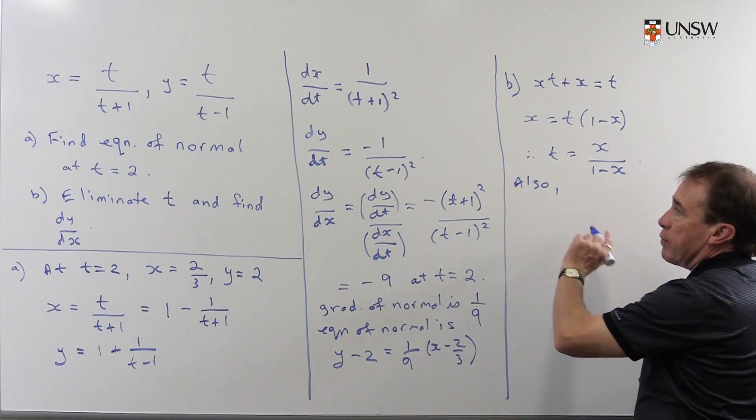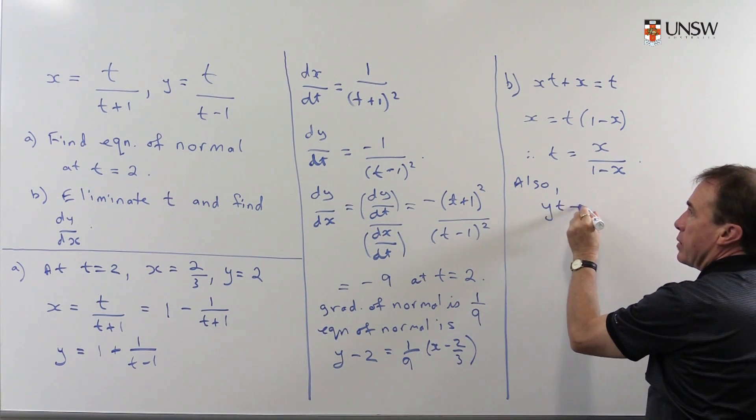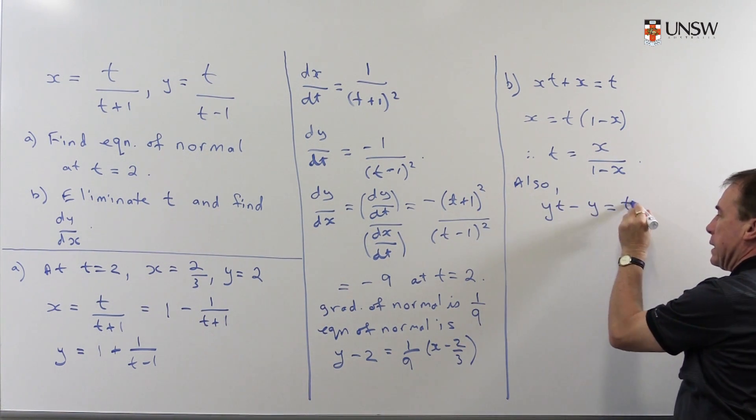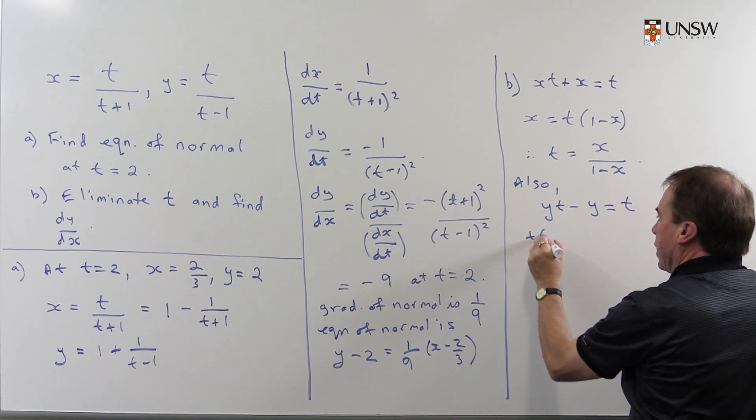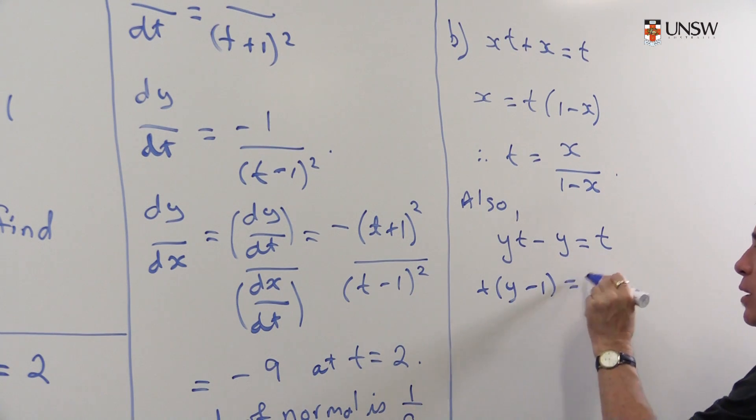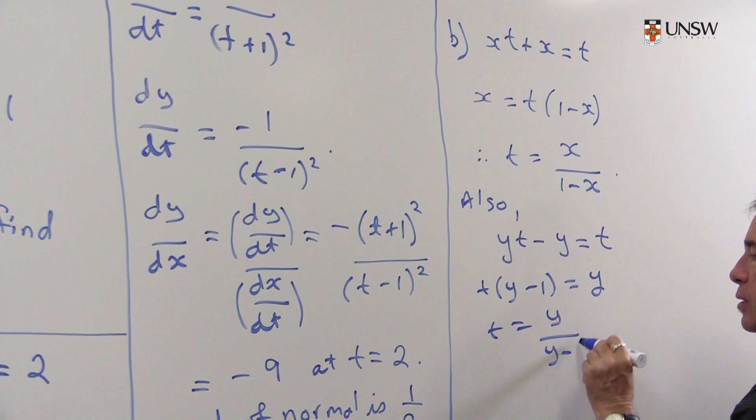So I do a similar thing for the y. So I cross multiply and I get yt minus y equals t. And I'm going to take all the t's over this side and the y's over there. So I get t into (y-1) equals y. And I can get t is y over (y-1).